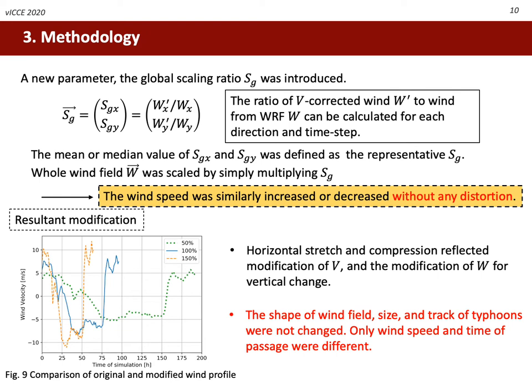A new parameter called the global scaling ratio Sg was introduced. This is a ratio of the corrected wind field to the original wind field. There are many Sg values for each direction and each time step, but that causes a change of the shape of the wind distribution — wind can be stronger in one part but weaker in others. This is a problem when investigating the pure effect of V on wind waves. Therefore, a representative value of Sg was chosen, defined statistically for each of the eight typhoons. Finally, the whole wind field was scaled by multiplying the representative Sg, meaning the modified wind field has similarity to the original wind field and the shape of wind distribution was maintained.